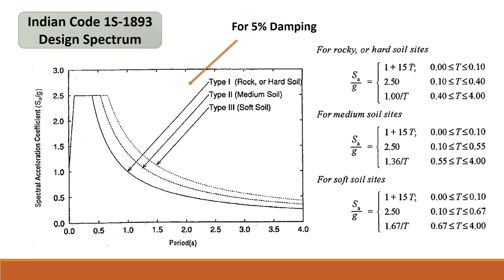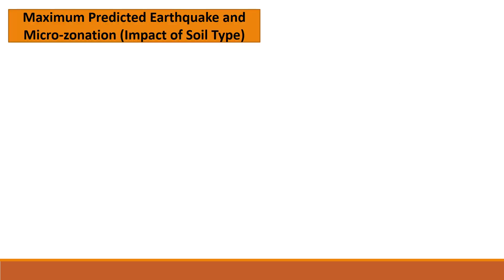The set of equations on the right give the variation of the spectral acceleration coefficient SA/g with respect to the time period of structures. The design spectra has a set of equations for each soil type. For rocky soil, SA/g has a particular set of equations and is lesser in value compared to medium soils. The set of equations for soft soil has the maximum value for SA/g.